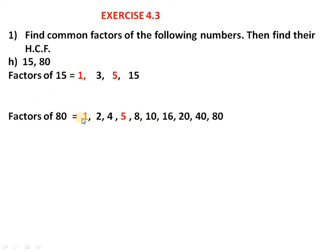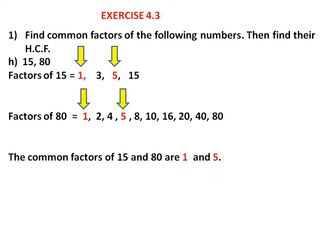Factors of 80 are 1, 2, 4, 5, 8, 10, 16, 20, 40, and 80. Checking for common factors: 1 is common, 3 is not in 80's factors so we ignore it, 5 is present in 80's factors, and 15 is not in 80's factors. So the common factors of 15 and 80 are only 1 and 5. The highest is 5, so HCF of 15 and 80 is 5.